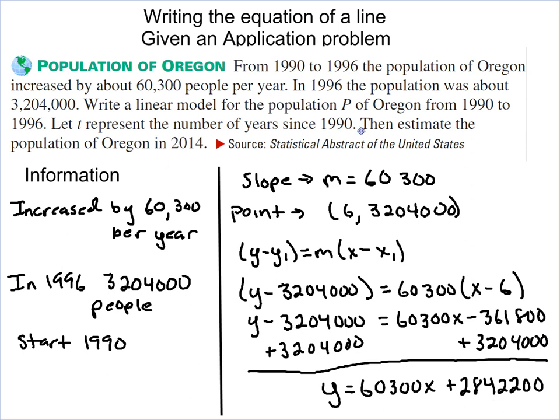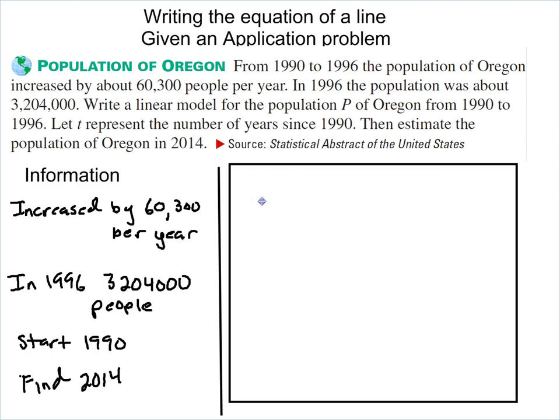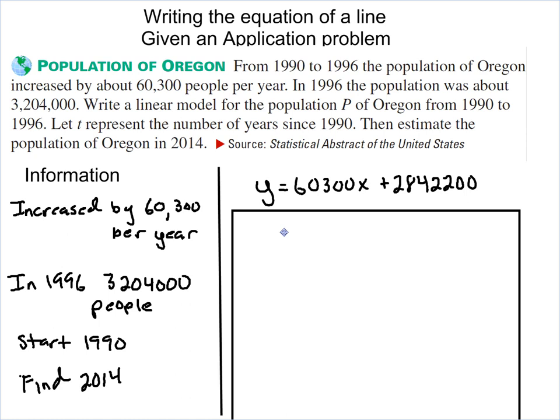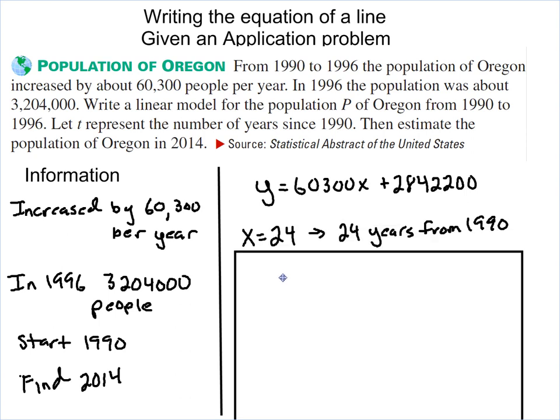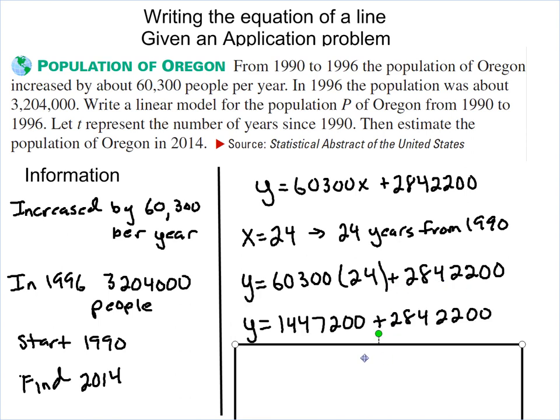Now if you notice, there's one other question at the end of it. It says, then estimate the population of Oregon in 2014. So what we're going to do is we're going to take the information we have again and our equation, and we're going to find 2014. So the first thing we have to find out is how many years since 1990 is 2014. In that case, x is 24. So all we're going to do is take our original problem and plug in 24. So we have y equals 60,300 times 24 plus 2,842,200. So we calculate that out, and we get the population of Oregon in 2014 is 4,289,400.